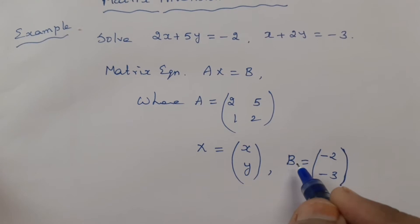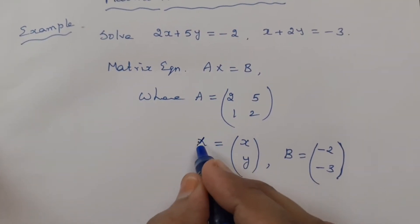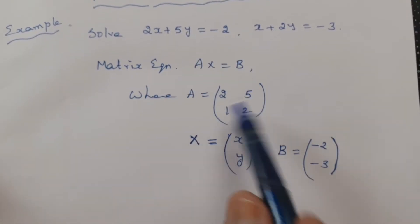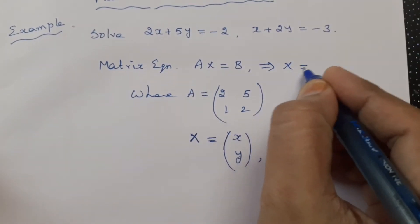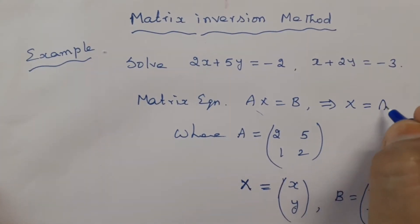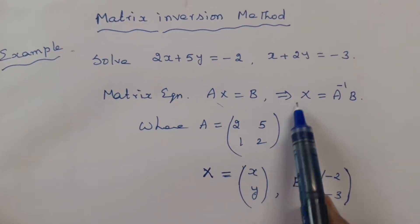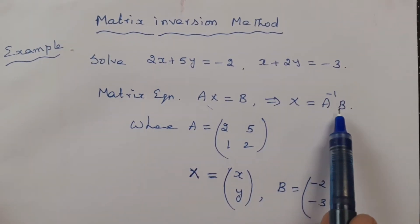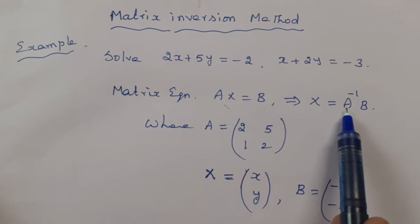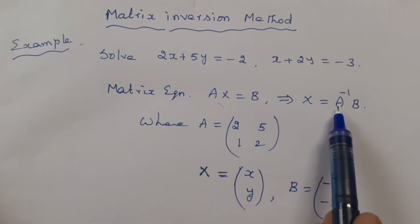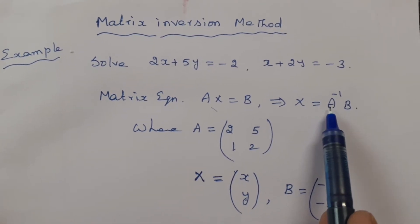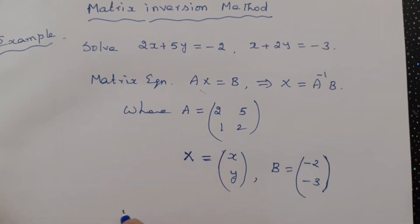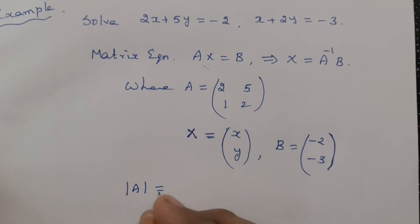These are the matrices A, x, and b. We have to find the matrix x which contains x and y values. From this, x equals A inverse b, so to find x and y values we have to multiply A inverse and b. First, let us find A inverse. To find A inverse, we first check whether A is singular or non-singular — if A is singular then inverse does not exist. So first let us verify: we find the determinant of A, which is the determinant of 2, 5, 1, 2.